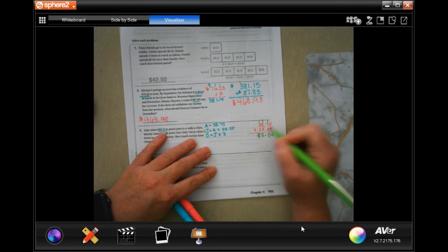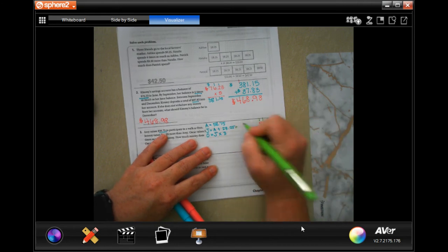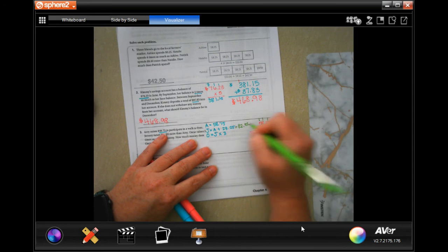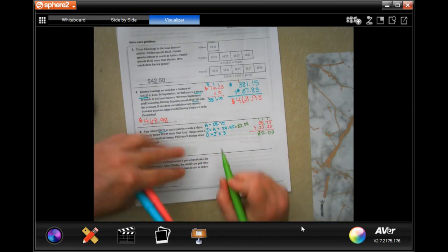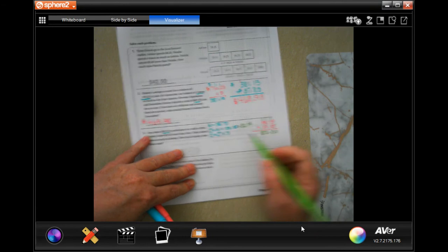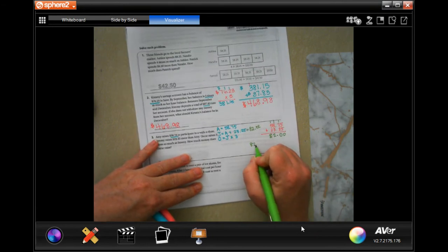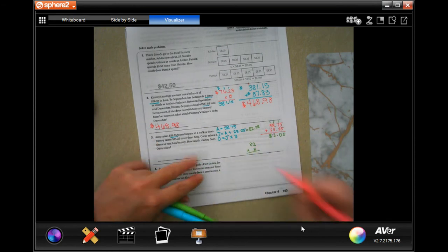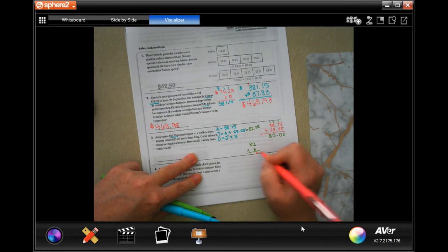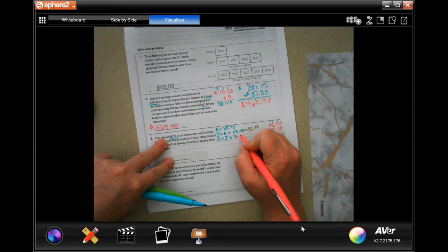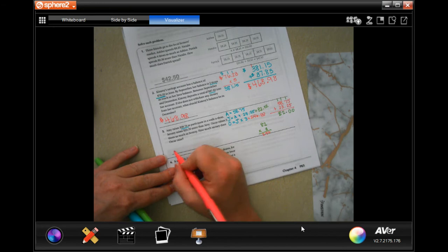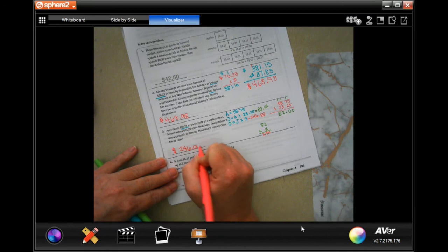So Jeremy raised $82. Now Oscar raised $82 times 3, so I need to do 82 times 3. 3 times 2 is 6 and 3 times 8 is 24, so 246 dollars. Don't forget your dollar sign. Oscar raised $246.